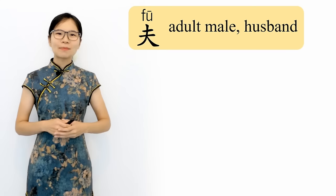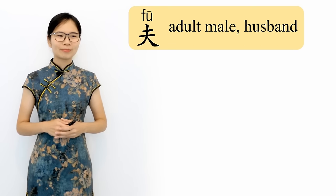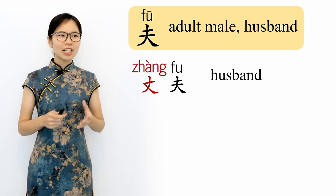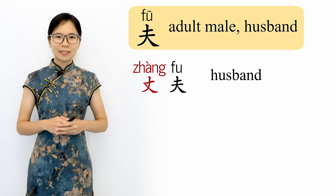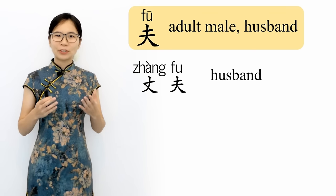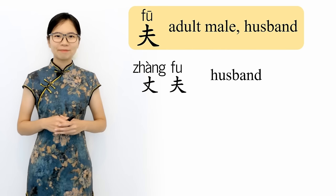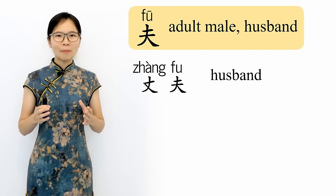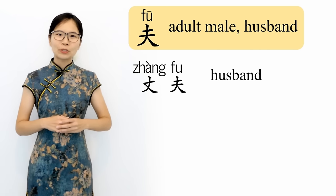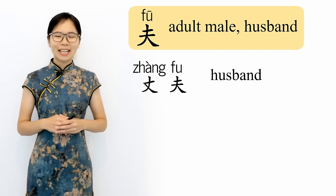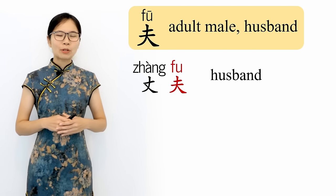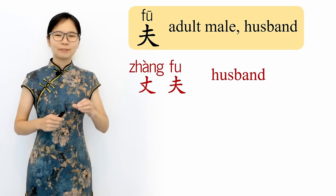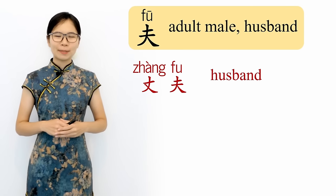Here are some example words that use the character 夫. 丈夫 means husband. The character 丈 comes from a traditional Chinese measurement equal to about 3 meters or 10 feet, referring to women in ancient times wanting to choose a tall man who could protect them to be their husband. Note that in 丈夫, 夫 is pronounced with the neutral tone. 丈夫, husband.